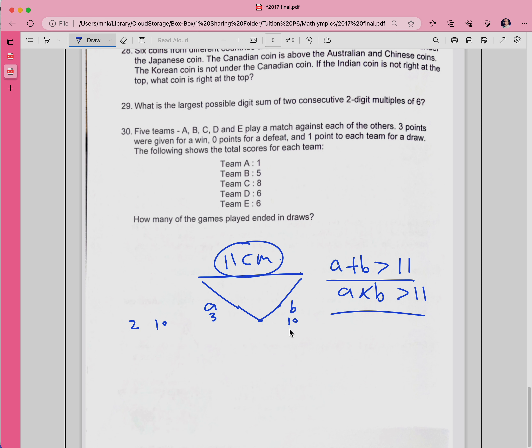Can it be 10? No. Why? 3 plus 10 is 13, which is bigger than 11, but 2 plus 10 is one possible answer. Now I try 3 and 9 - that works. What about 3 and 8? No. So now you need to switch to 4.